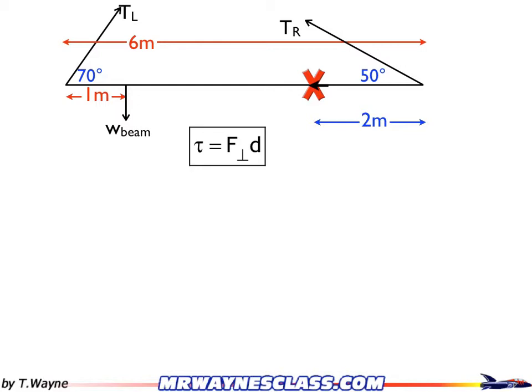So if I look at TR, the horizontal component is TR cosine 50. The vertical component is TR sine 50. The problem is the tail of TR sine 50 is in the wrong place on my extended free-body diagram. It needs to be at the base where TR touches the body. So in other words, it's got to be all the way over here on the right-hand side.